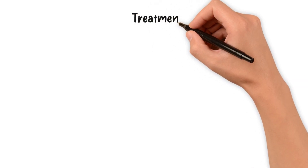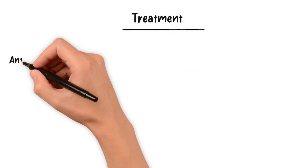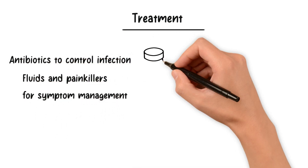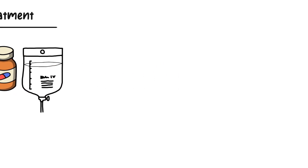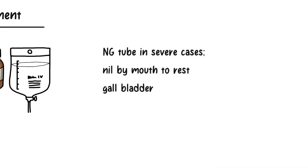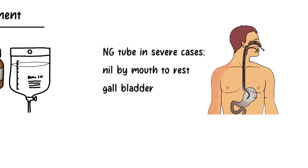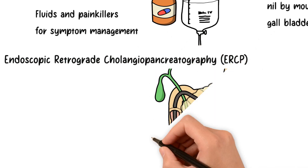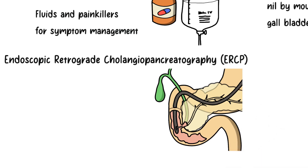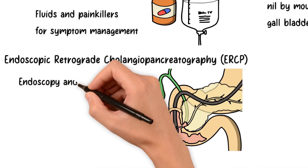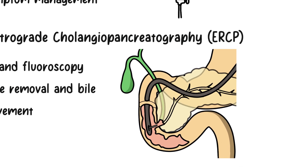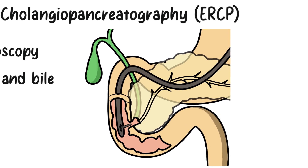Treating acute cholecystitis involves a multifaceted approach. Antibiotics are administered to control infection, while fluids and painkillers help manage symptoms. In severe cases, a nasogastric NG tube may be inserted and patients are kept nil by mouth to rest the gallbladder. Endoscopic retrograde cholangiopancreatography, or ERCP, is sometimes used to remove gallstones or improve bile duct flow. This procedure combines endoscopy and fluoroscopy to visualize and treat problems in the bile and pancreatic ducts, and is commonly used to remove gallstones, treat obstructions, and improve the flow of bile.